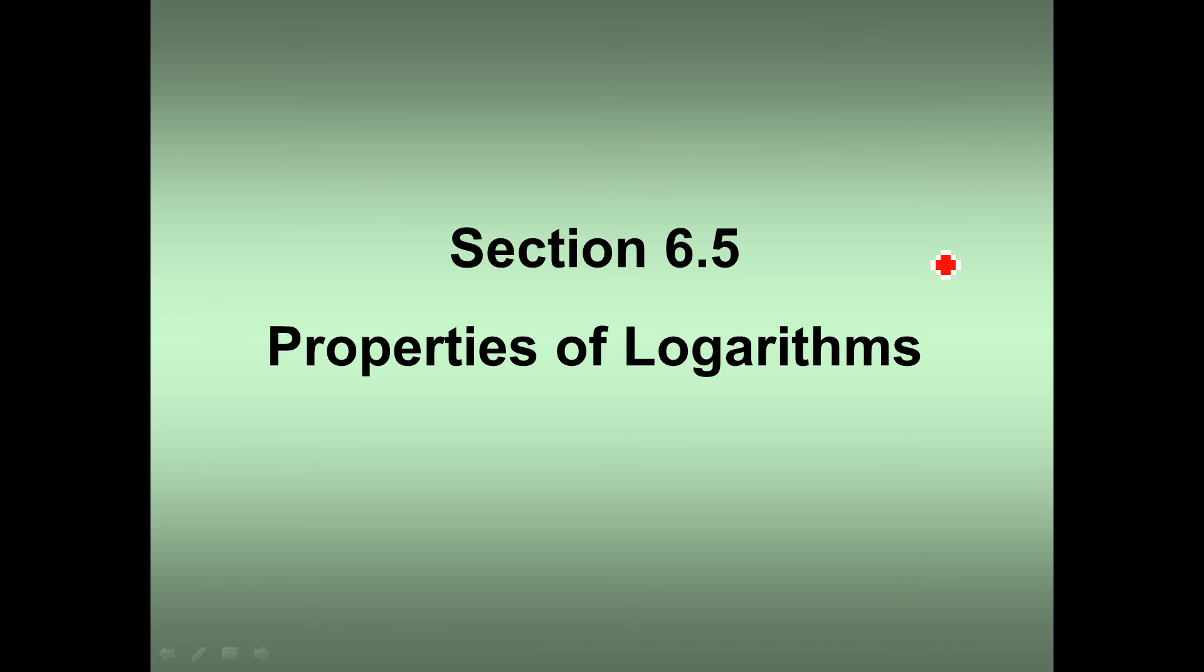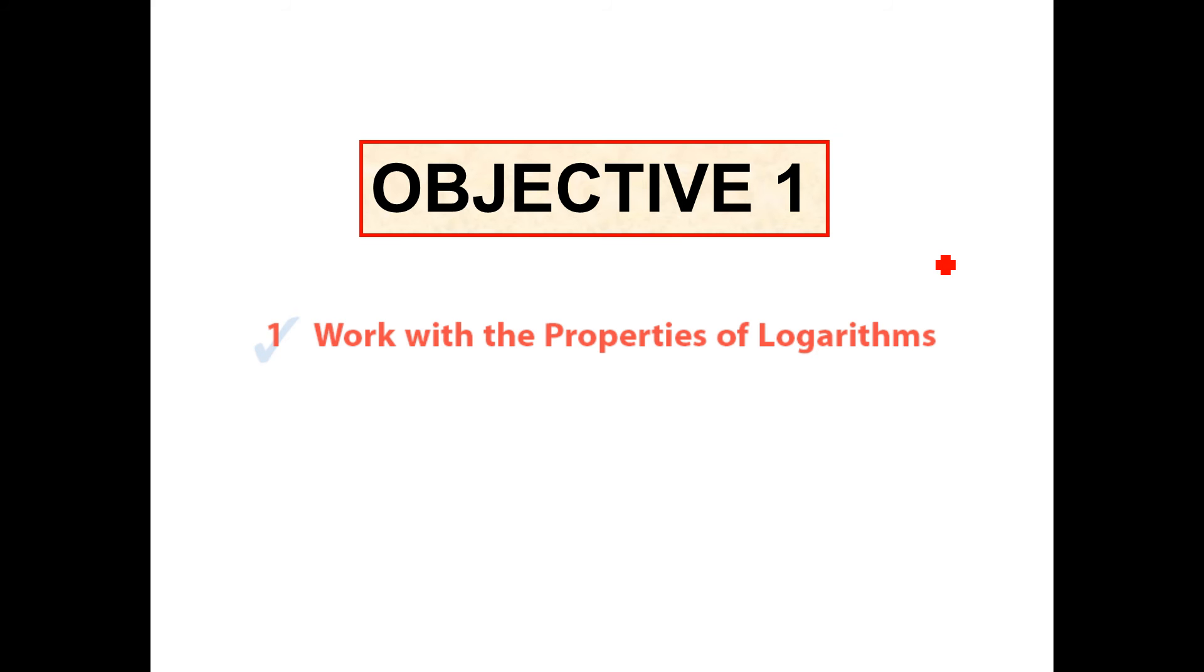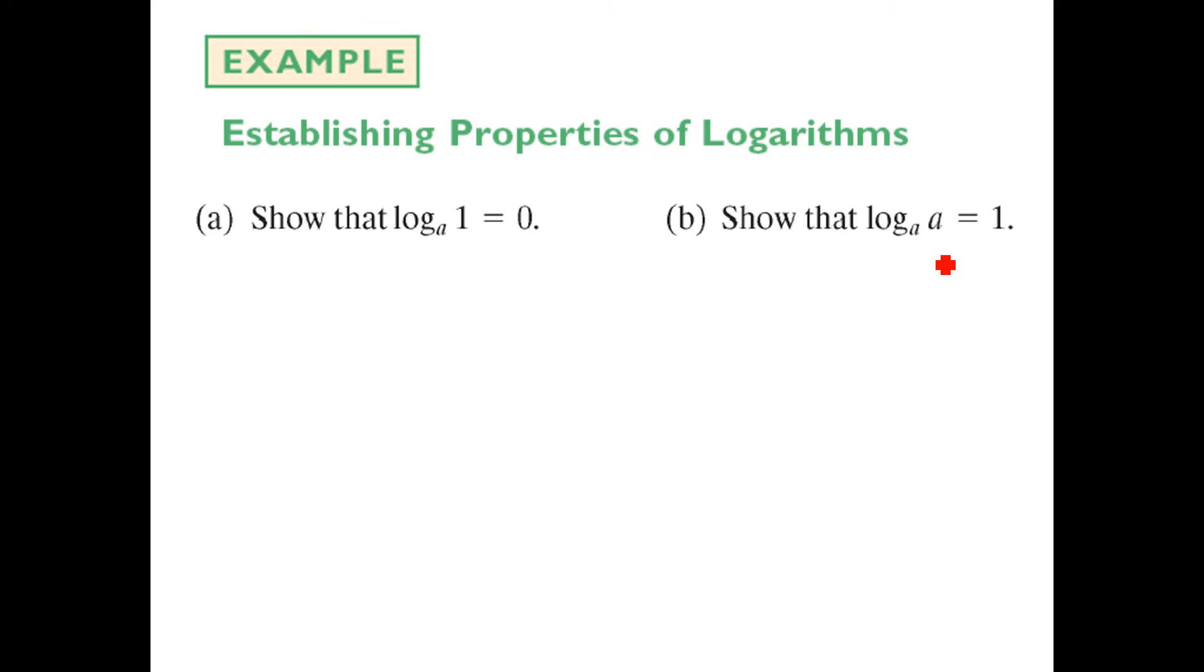Let's get started with 6-5, properties of logarithms. Our first objective is to work with the properties of logarithms to rearrange and rewrite them. Let's prove that log base a of 1 equals 0. We can do this by rewriting as a to the 0 equals 1, and we know that anything to the 0 power equals 1. So we've proved this is our very first property of logarithms. Log base a of 1 automatically is going to be 0.